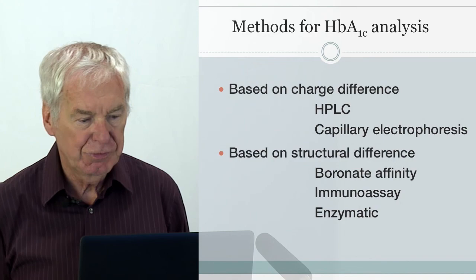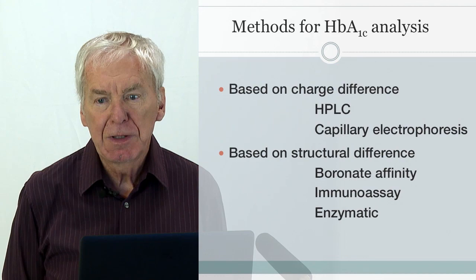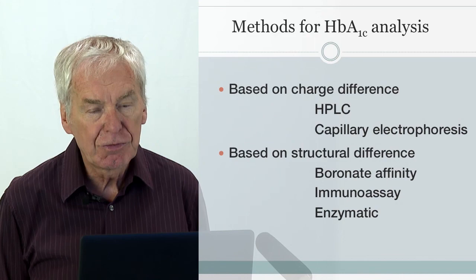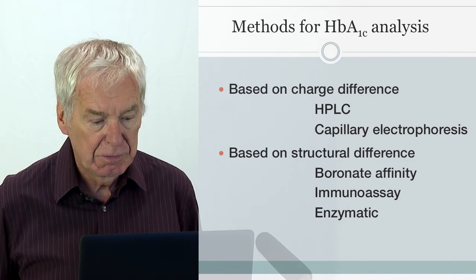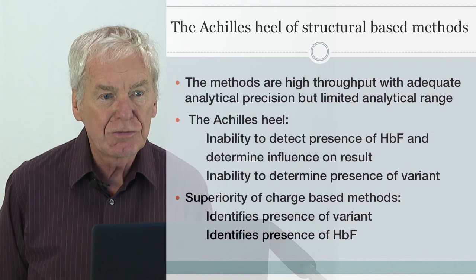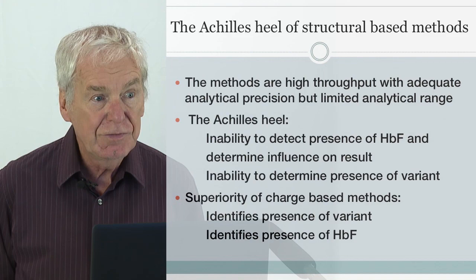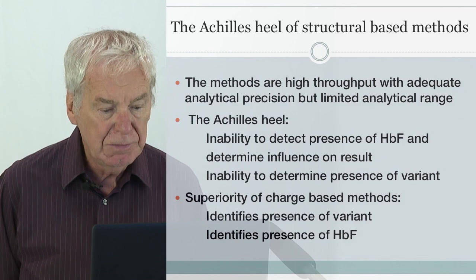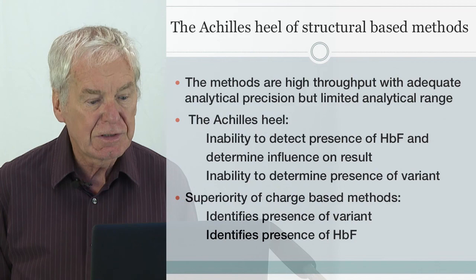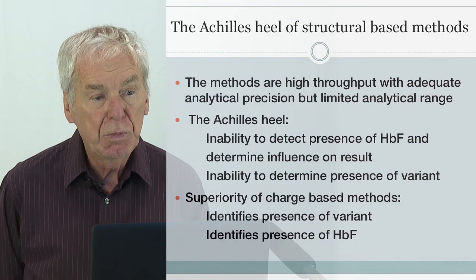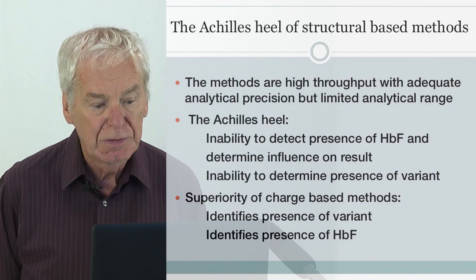What methods do we have for measuring hemoglobin A1c? Traditionally they are divided into two groups. The first is methods based on charge differences: HPLC and capillary electrophoresis are the strongest members of this group. The second group is based on structural differences: boronate affinity, immunoassay, and enzymatic assay. All methods based on structural differences have an Achilles heel: the inability to detect hemoglobin F and the inability to detect the presence of a variant.